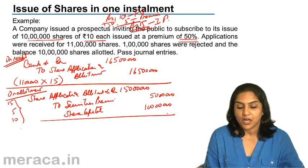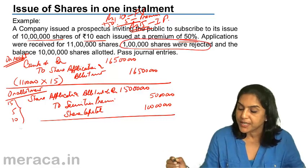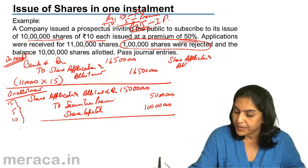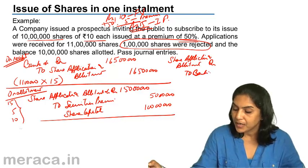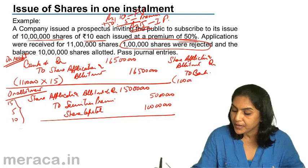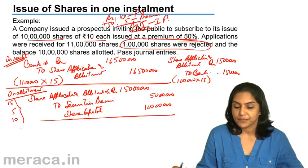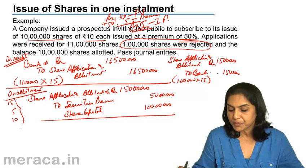This is the entry on allotment. However, there were 1 lakh shares which were rejected, so the money received for those must be refunded. The entry for refund is: Share Application and Allotment Account debit to Bank — amount being 1 lakh × ₹15 = ₹15 lakhs. To summarize: on receipt, Bank to Share Application and Allotment; on allotment, Share Application and Allotment debit to Securities Premium and Share Capital; on refund, Share Application and Allotment debit to Bank.